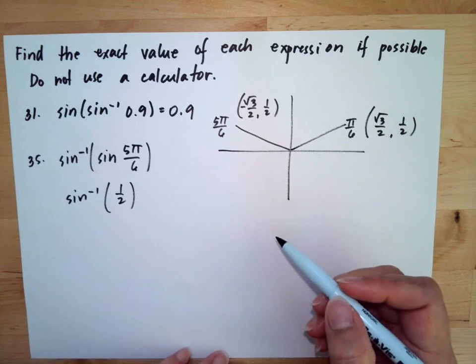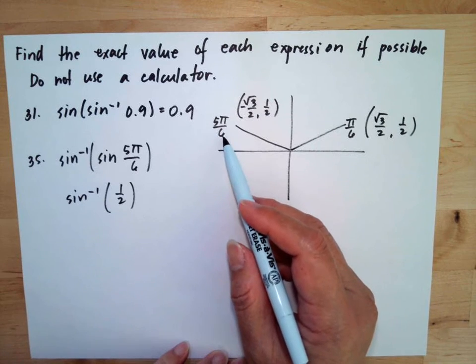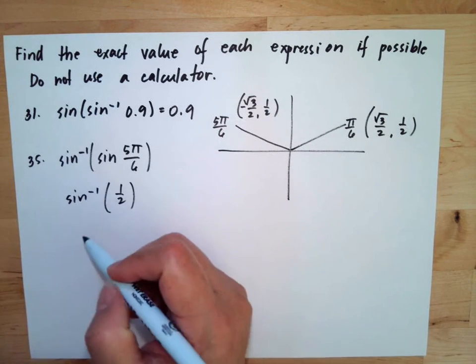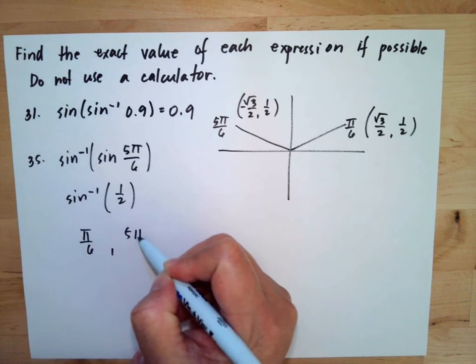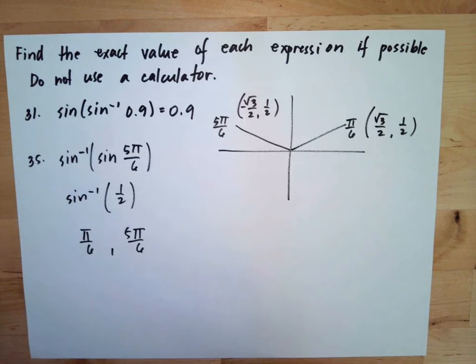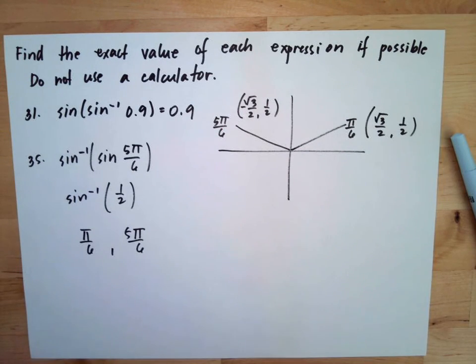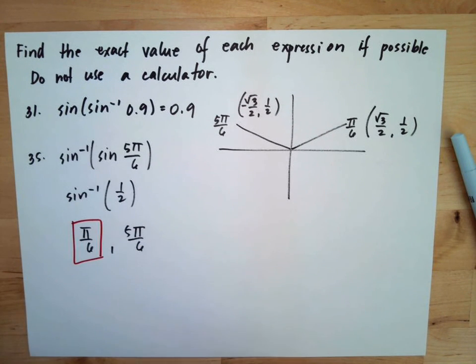And the inverse sine of 1 half, it is possible that it is 5π/6 or π/6. So there's two possible answers. This can be π/6 or it can be 5π/6. But in the unit circle, before you go to 5π/6, you already have the π/6. So we will take the π/6.